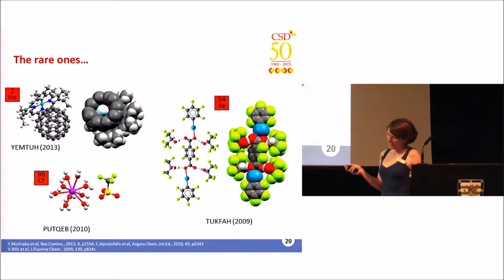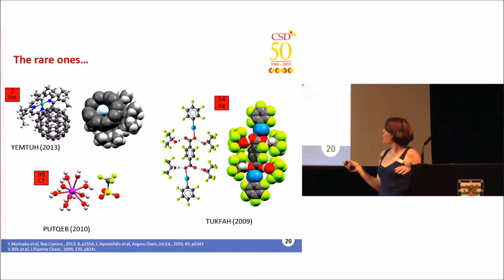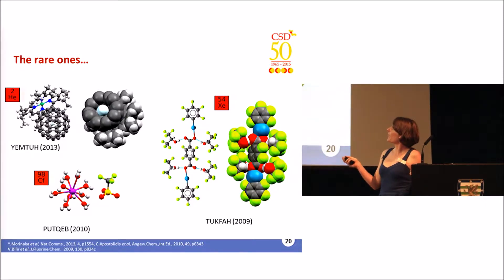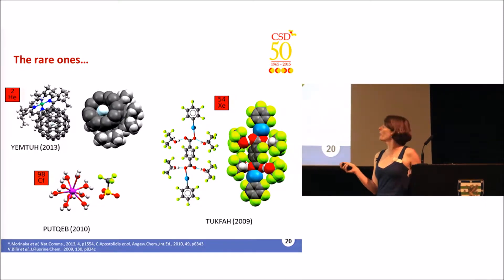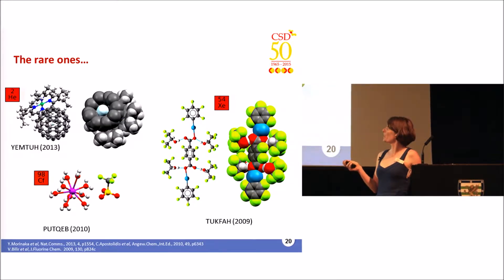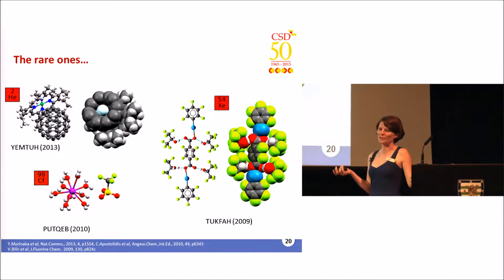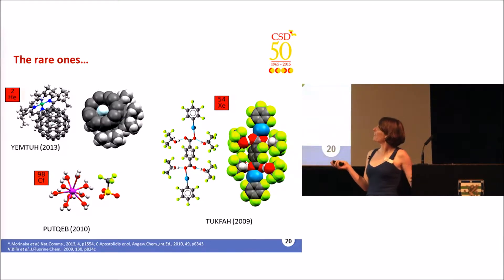Lanthanides and actinides were added to the list in the 1980s. In the 1980s we saw the first noble gas in a crystal structure, and recent additions have included more noble gases — so there aren't that many elements left to get. In one recent structure, helium is actually encapsulated in a fullerene, and a similar structure exists for krypton — so maybe that's a route to go down if you want a structure with a new element.